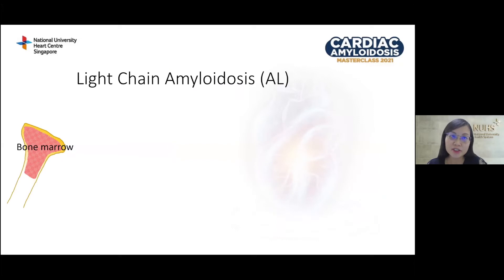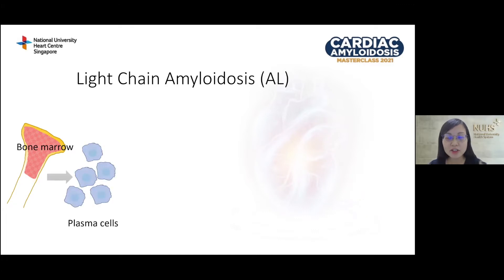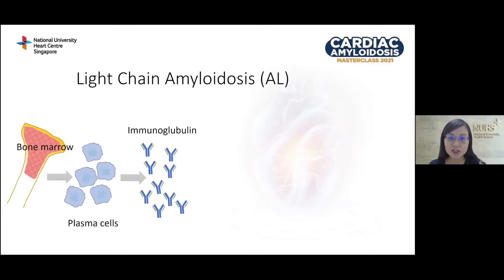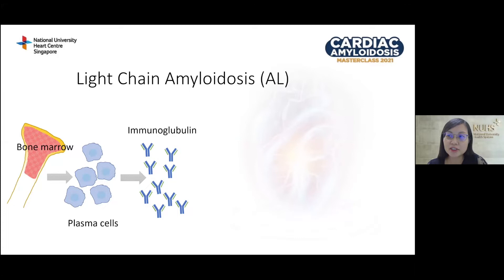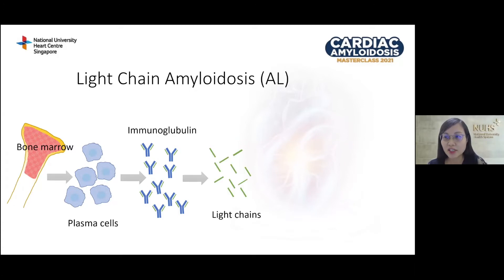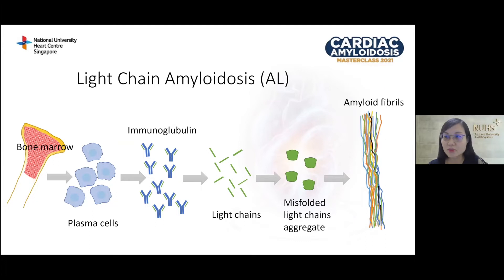Light chain amyloidosis is a plasma cell disorder where the bone marrow produces excessive amounts of plasma cells, which in turn leads to overproduction of immunoglobulin. Each immunoglobulin has heavy chains and light chains. In light chain amyloidosis, there is an excessive amount of immunoglobulin, leading to excessive light chains which misfold and clump together, forming insoluble amyloid fibrils. This is mainly a systemic disease affecting not only the heart, but also the kidneys, gastrointestinal tract, and nervous system.